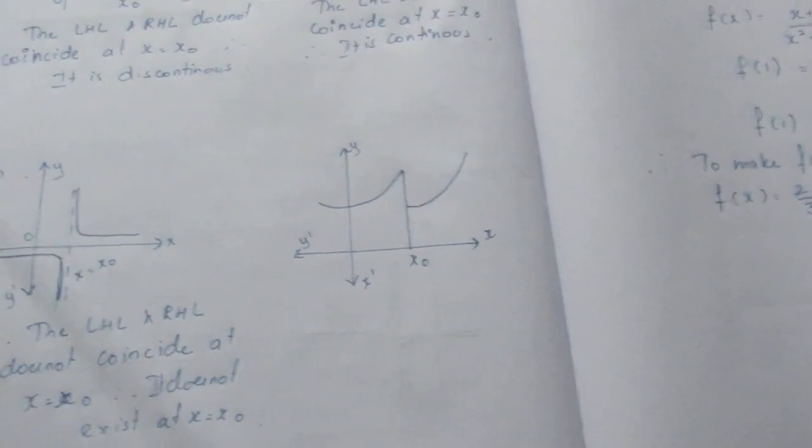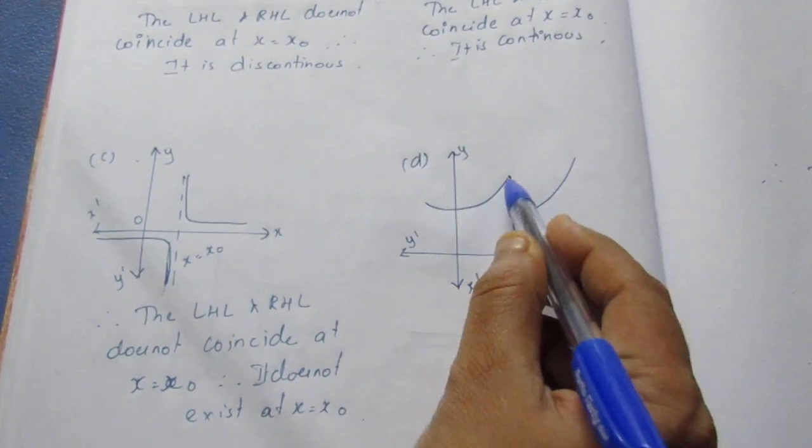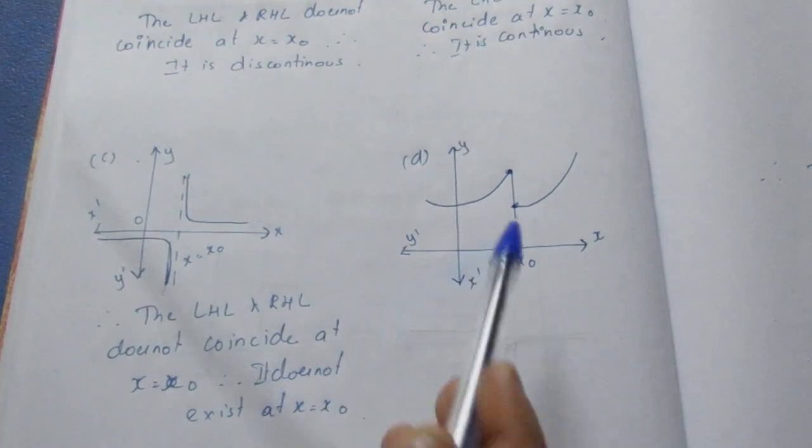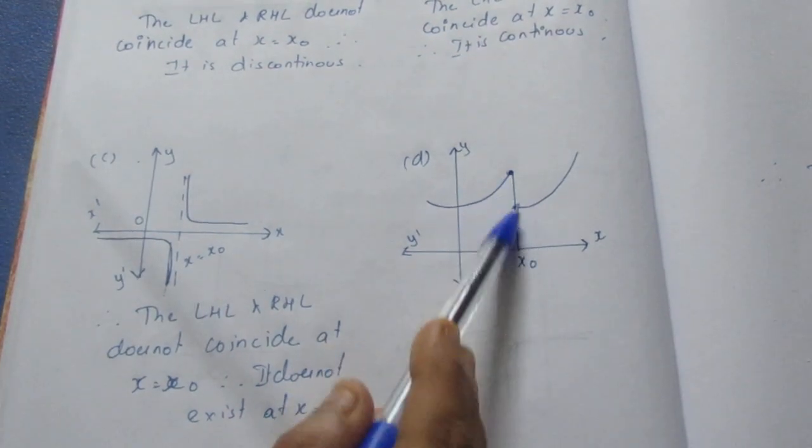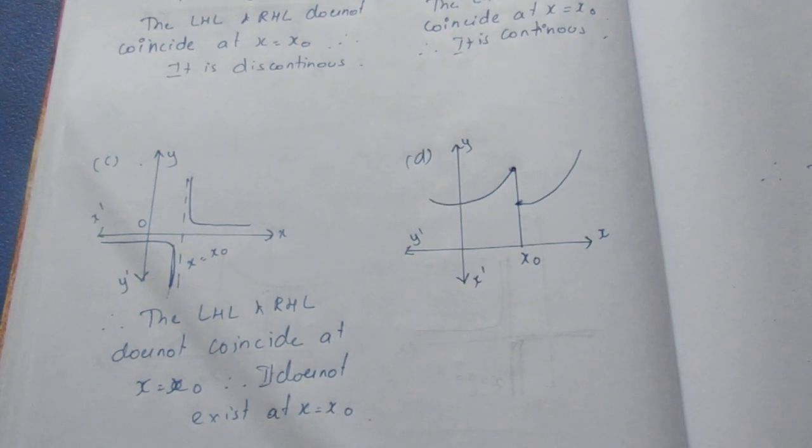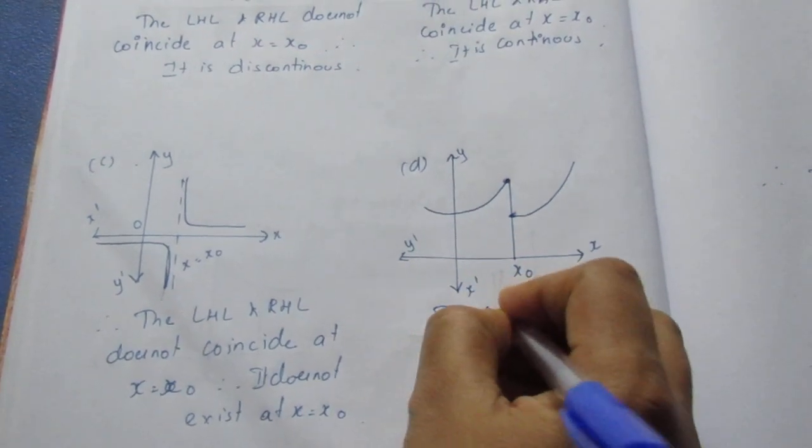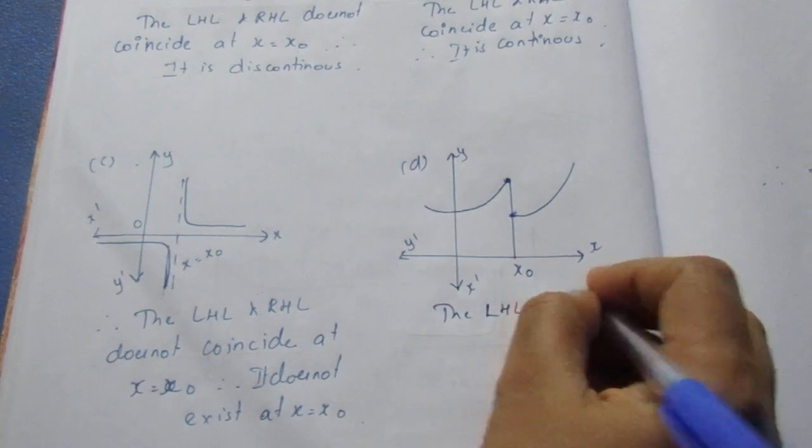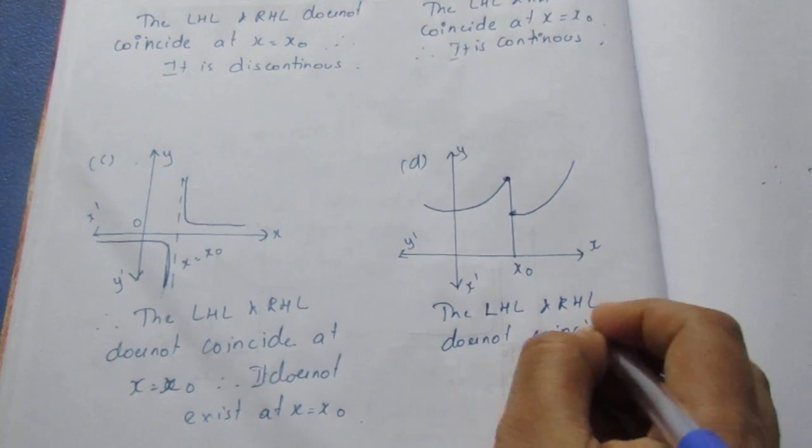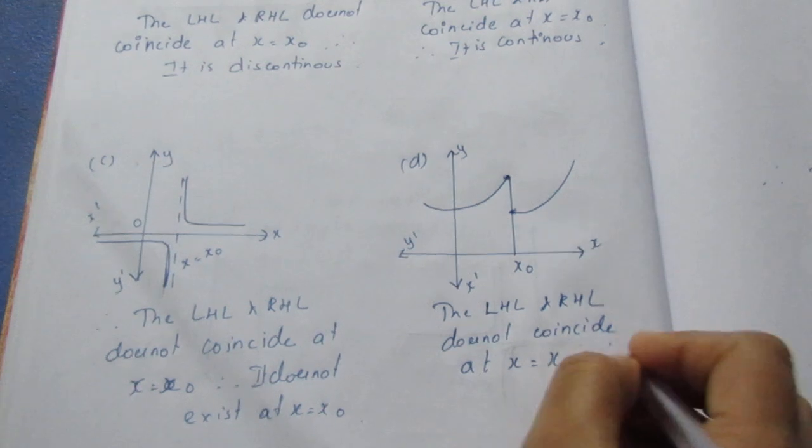Now, let's see D sum. For D sum, the left hand graph is the right hand graph. If you compare it with two points, this graph is the same way. This is x0. This graph is x0. We can connect to this graph. This graph is coincide. The LHL and RHL does not coincide at x equals x0. Therefore it is discontinuous.